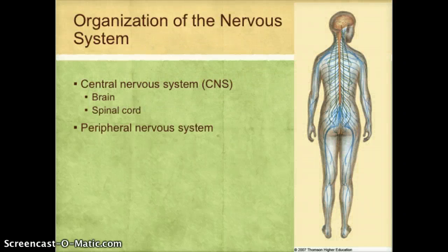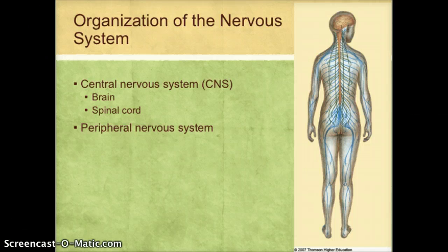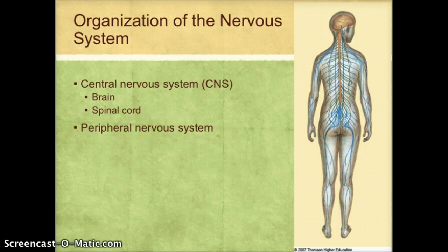The nervous system is divided up into different components. Traditionally, the first level of division is between the central nervous system, which makes up the brain and spinal cord, and the peripheral nervous system, which are all of the nerves throughout the body.